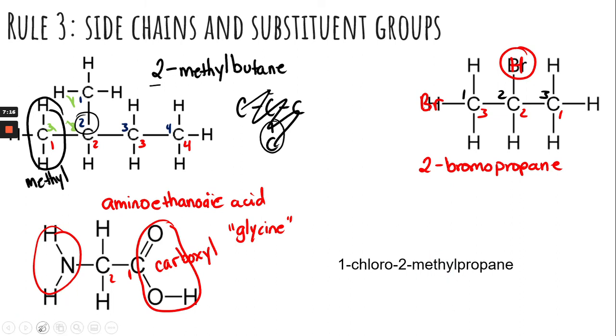All right, for the last one, going the reverse direction where we're going to draw this structure instead of naming it, what you want to do is figure out that chain of carbons first. So I jump straight to my chain of carbons, which is prop, and prop means three. So we need a chain of three carbons. One, two, three. Then I look at my suffix. I notice that A and E, so they're all single bonds. I don't have a special functional group. If I had a double bond or a triple bond or a functional group, I would want to draw that in next. I don't, so I'm good.